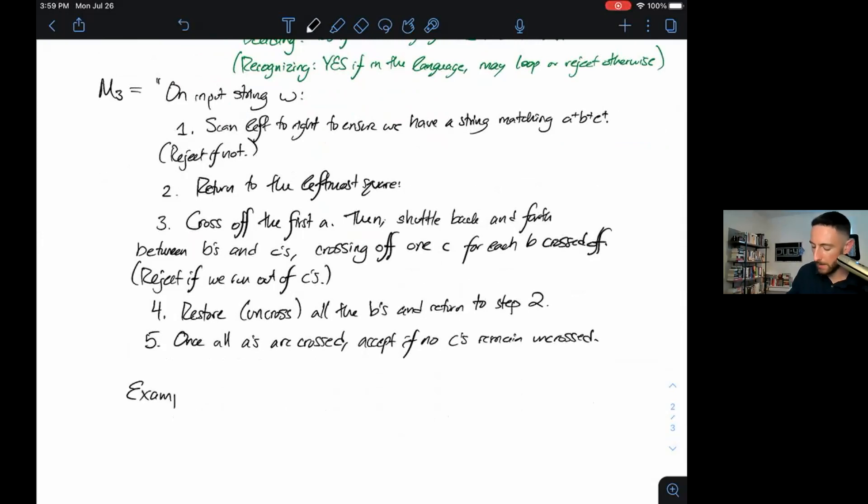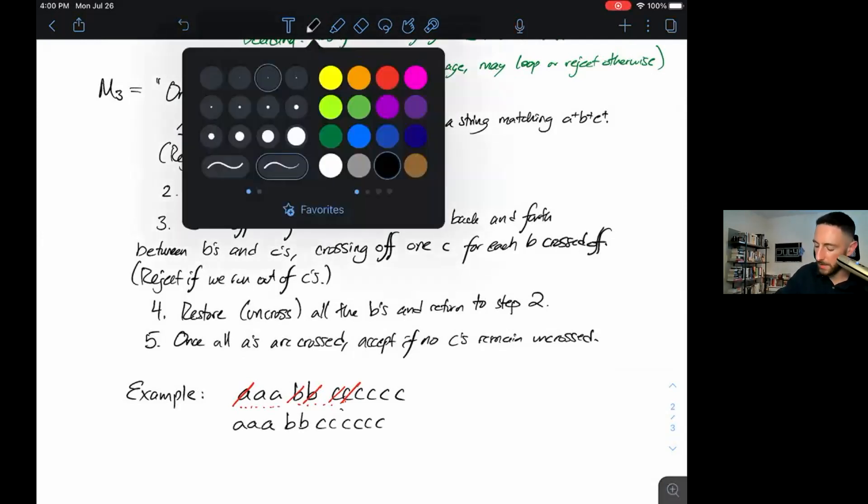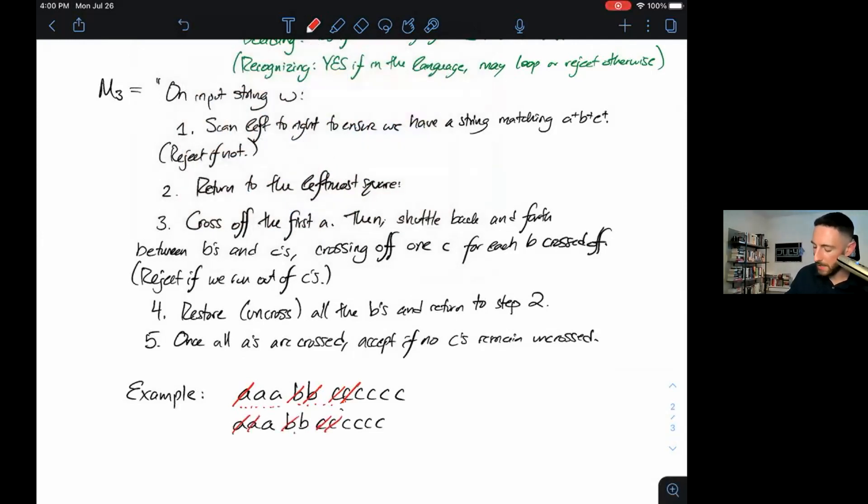What this could look like on the string AAABBCCCCCC: This is an accept string because there are three A's and two B's. Three times two is six, and there are six C's. We'd start by crossing out an A, going to the right, crossing out a B, crossing out a C, crossing out a B, crossing out a C. At this point, we've crossed out all the B's, but we still have some C's left. So we'd uncross the B's. We'd go back to the left, cross out an A, shuttle back and forth, two B's, two C's. The last step is going to cross off all the A's, the last two B's, and all six C's at the same time. We've sort of implemented a nested loop in our Turing machine using this crossing trick.